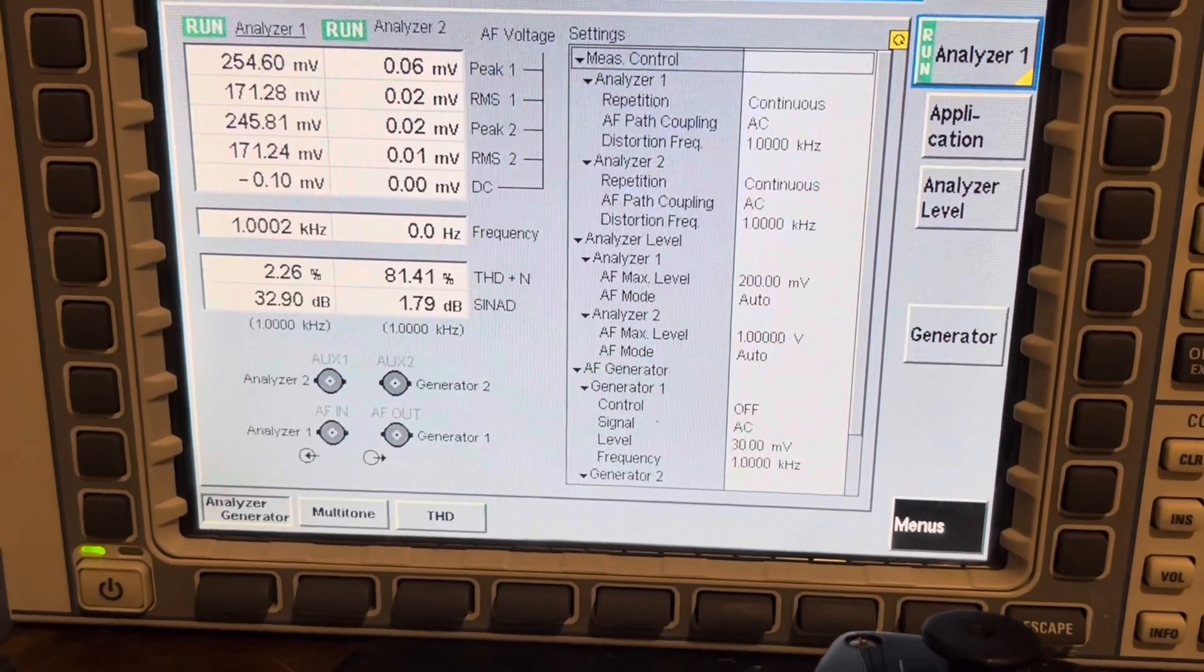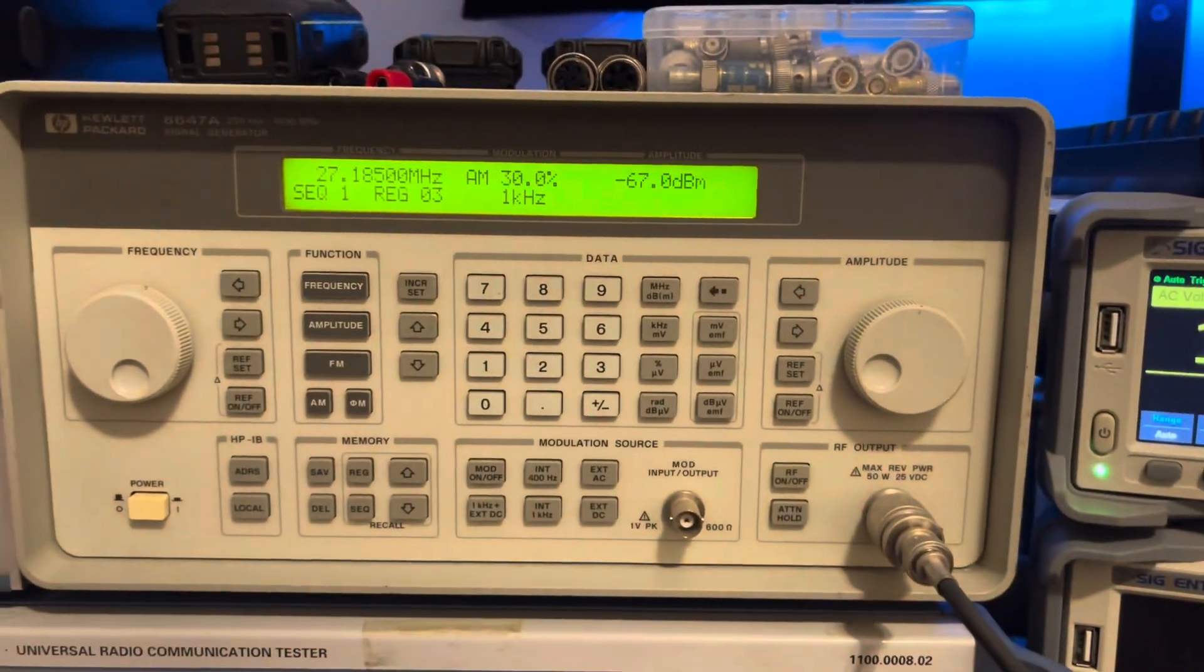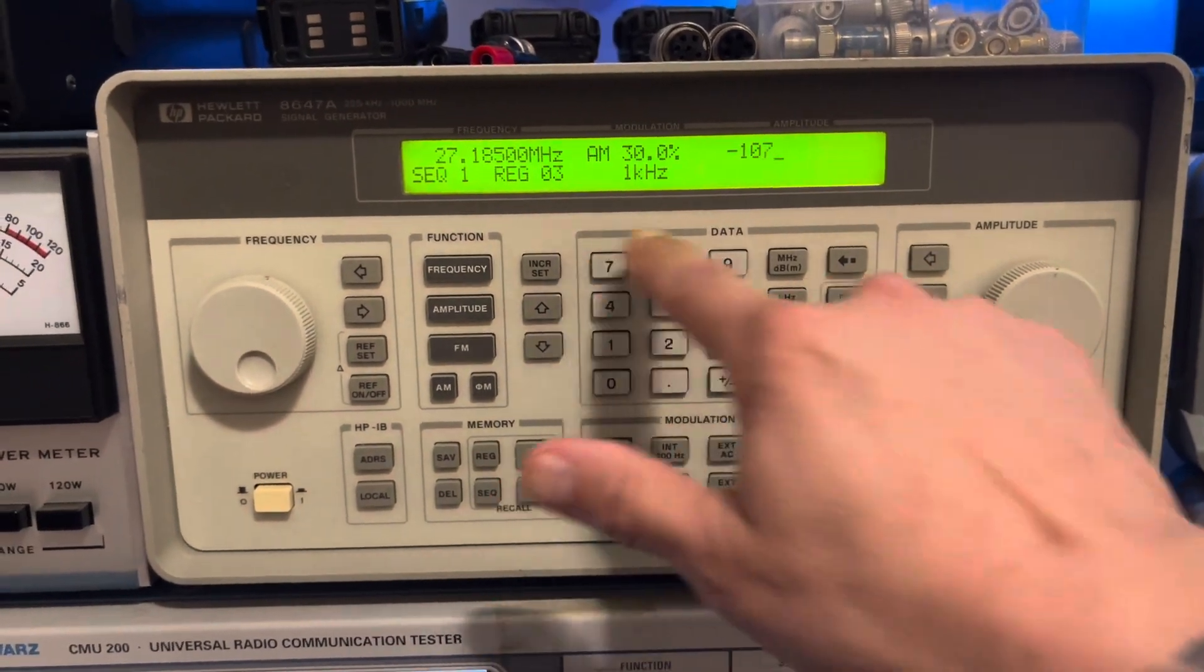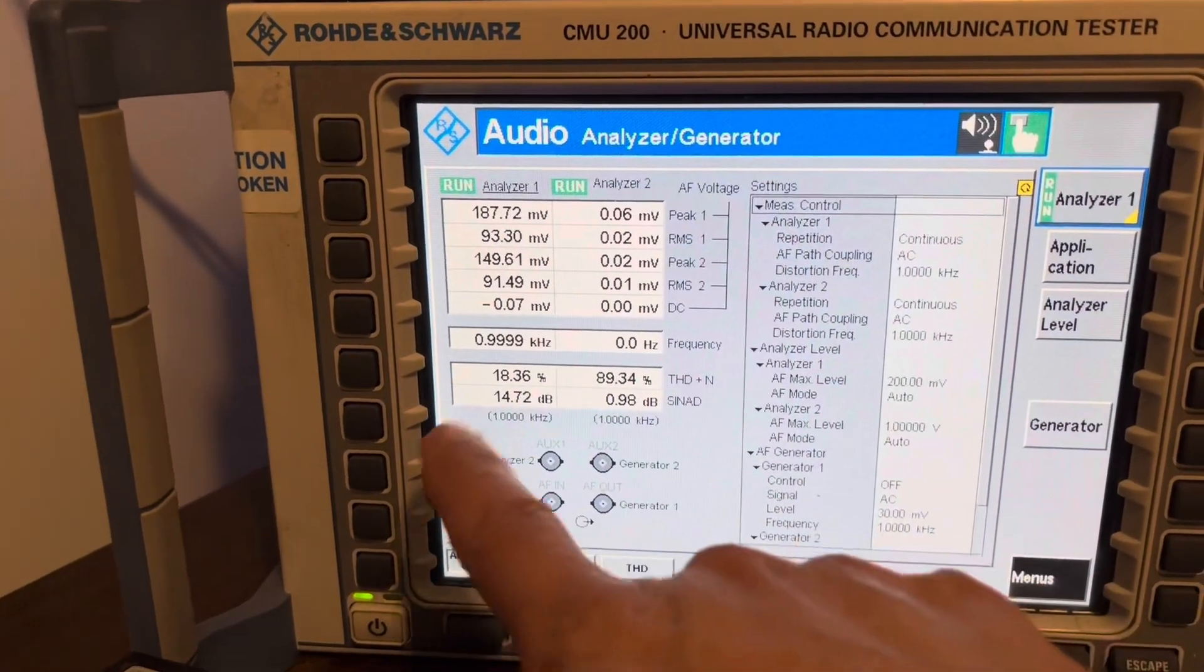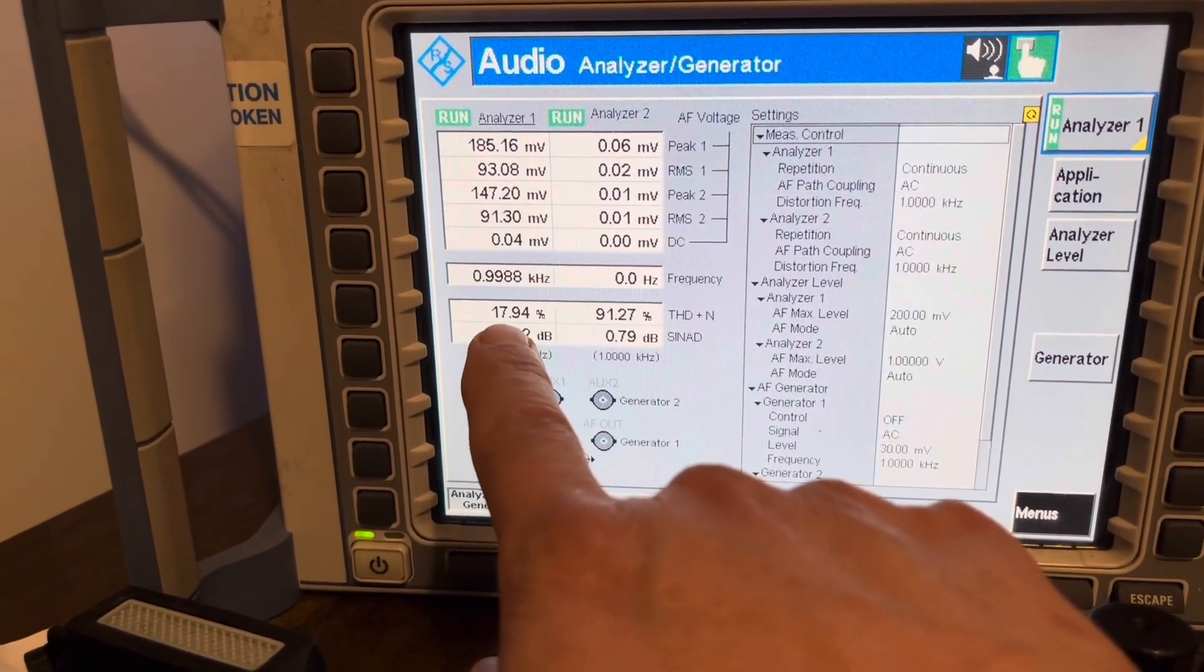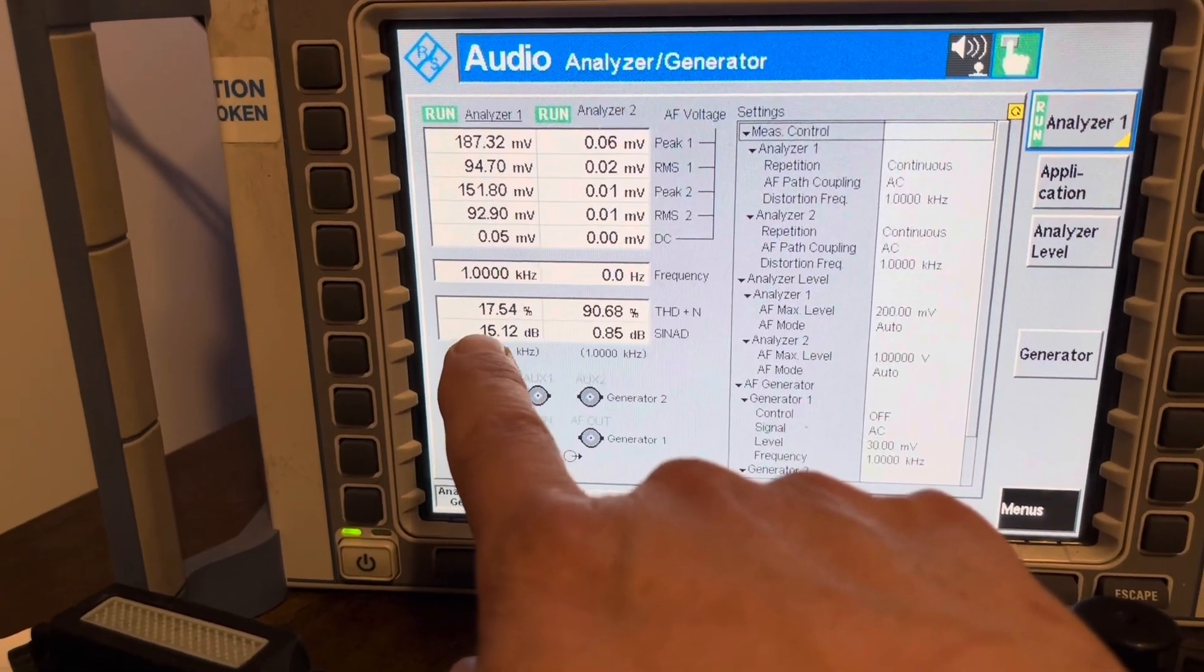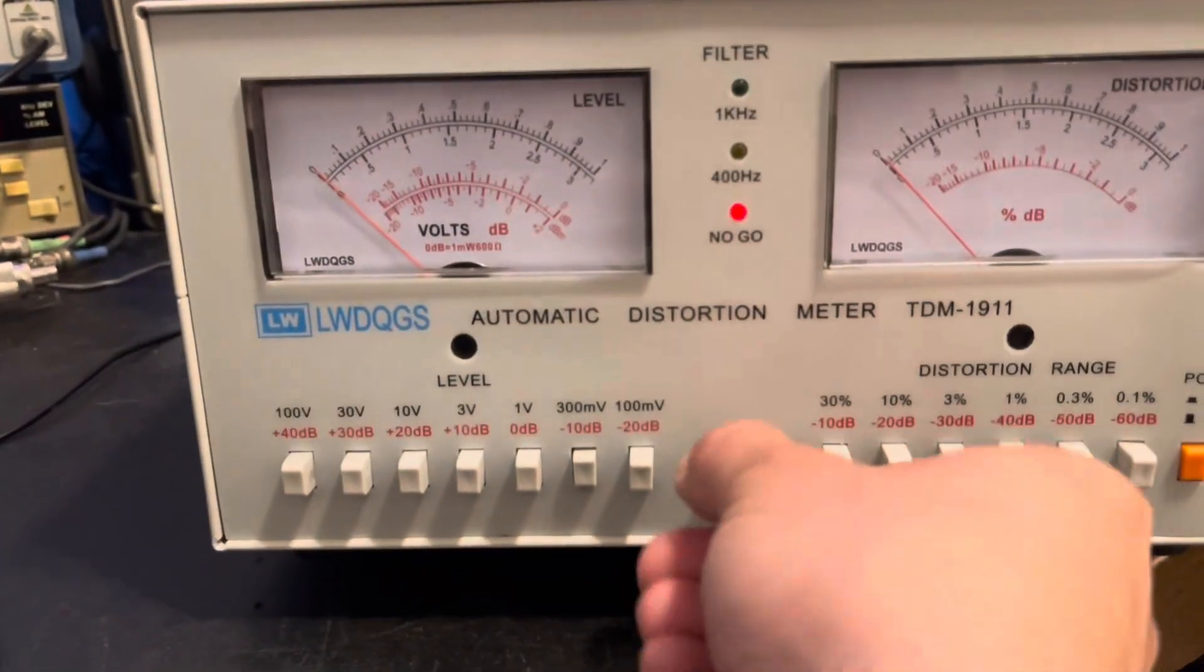Now let's take this RF signal generator, we're going to drop this signal down to one microvolt. All right, so now we're at one microvolt and you can see here that we're still showing that one kilohertz tone and we're now at about a 90 millivolt signal input and our distortion has jumped up to about 18 percent there, bouncing around about 18 percent. Now let's take a look at over here again on the TDM-1911.